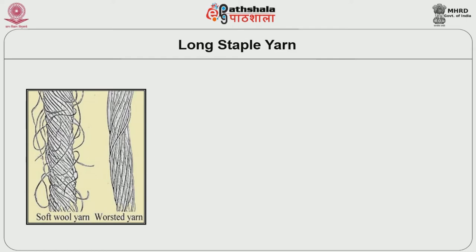Now we are going to look into long staple yarns. Long staple yarns are manufactured from fibers having more than 60 mm in length. Natural fibers having more than 60 mm include woolen fibers, worsted fibers, linen fibers, flax fibers, and jute fibers. Regarding synthetic fibers, all types of synthetic fibers can be used for long staple yarns, provided their length is more than 60 mm.